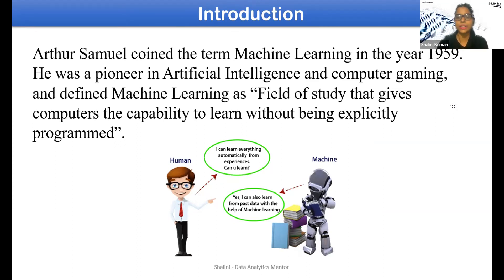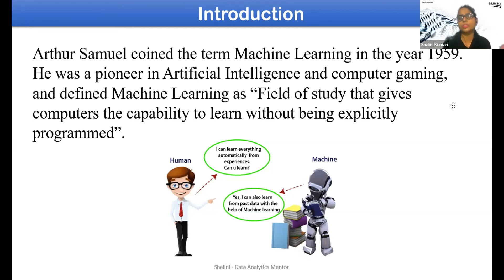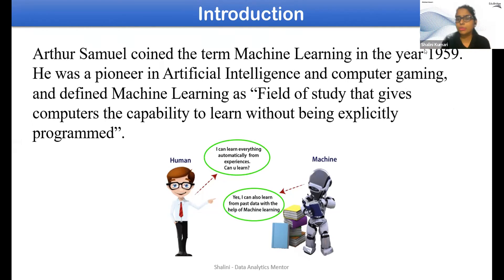Whenever you talk about machine learning, indirectly you are talking about artificial intelligence, because ML is a part of AI. Gaming, recommended systems, virtual assistants — all those AI approaches are part of this. Machine learning is a field of study that gives computers the capability to learn without being explicitly programmed.